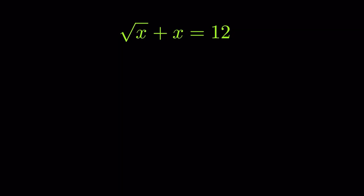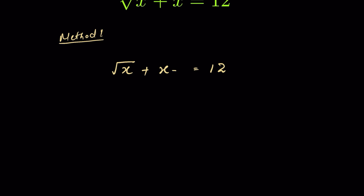Square root of x plus x equals 12. We have to find the value for x. There are two methods we can use. For method one, let's subtract x from both sides, so the x terms cancel, and we have square root of x equals 12 minus x.